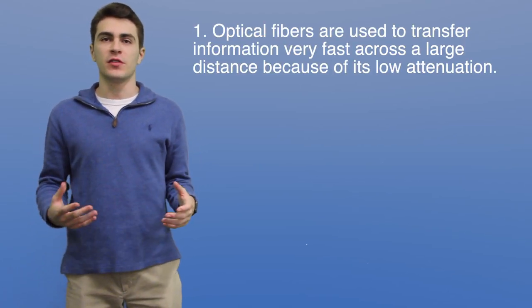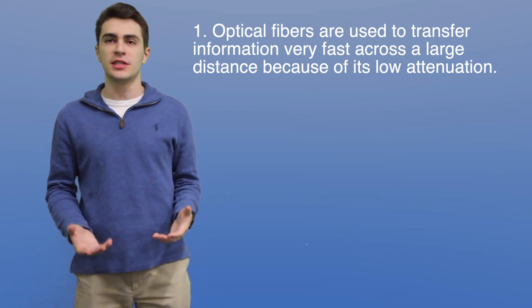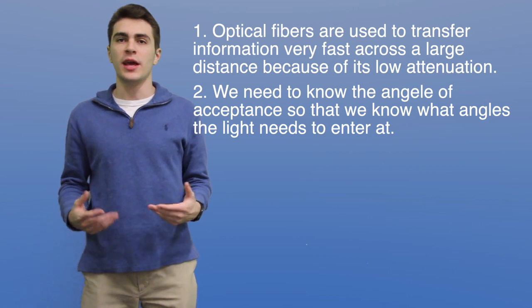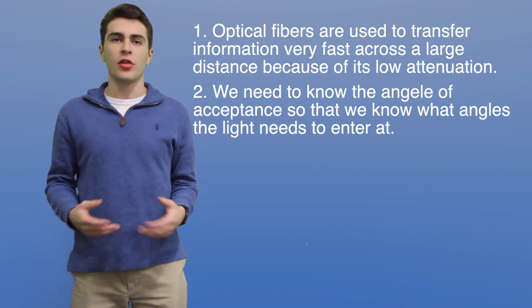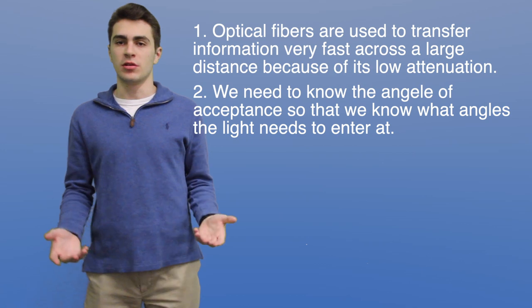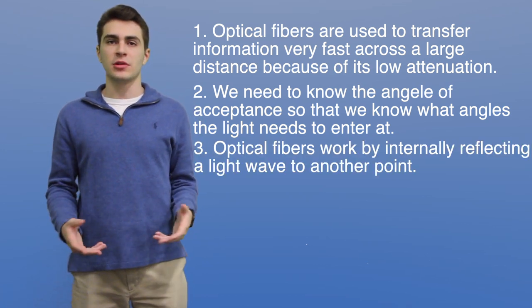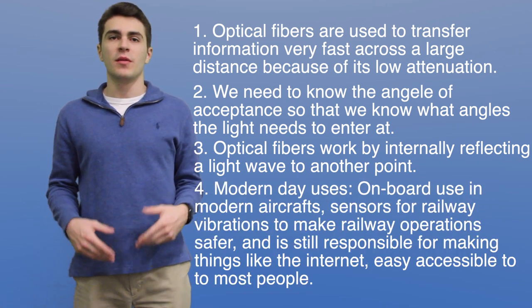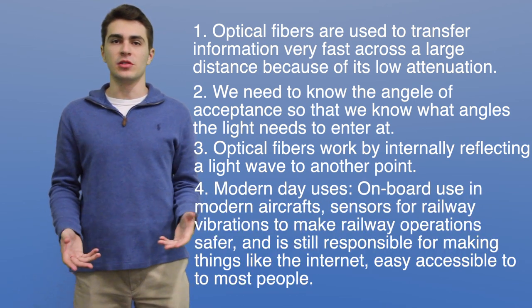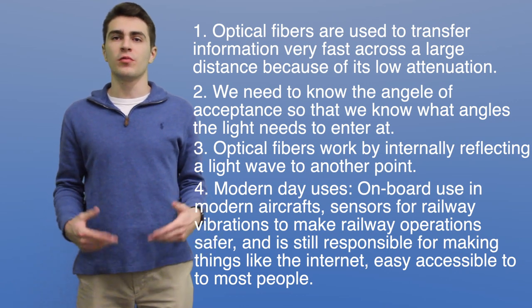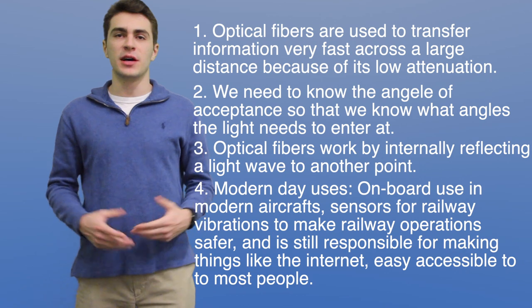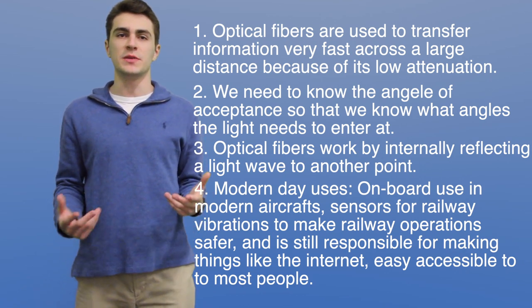So before I go, let's summarize what we've learned. Optical fibers are used to transfer information very fast across a large distance because of its low attenuation. We need to know the angle of acceptance so that we know what angles the light needs to enter at — otherwise the fiber is rendered useless because we don't get any total internal reflection. Optical fibers work by internally reflecting a light wave to another point. And lastly, some new information: modern day uses for optical fibers include onboard use in modern aircrafts, sensors for railway vibrations to make railway operations safer, and optical fibers are still responsible for making things like the internet easy and accessible to most people.